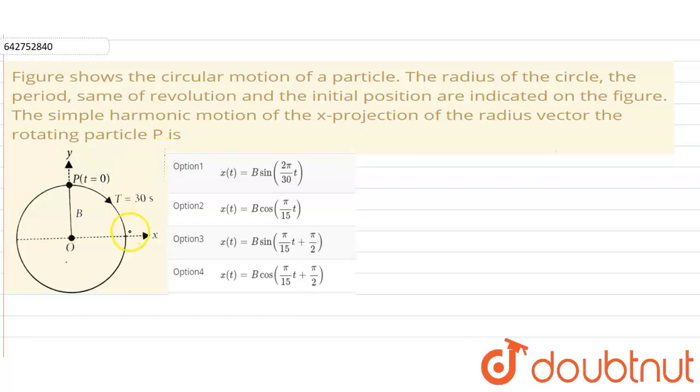Now in the given figure we have been given a circular motion of a particle. We have to tell what will be the equation of the x projection of the radius vector of the rotating particle P. Now the time period of the rotation is given to us as 30 seconds.